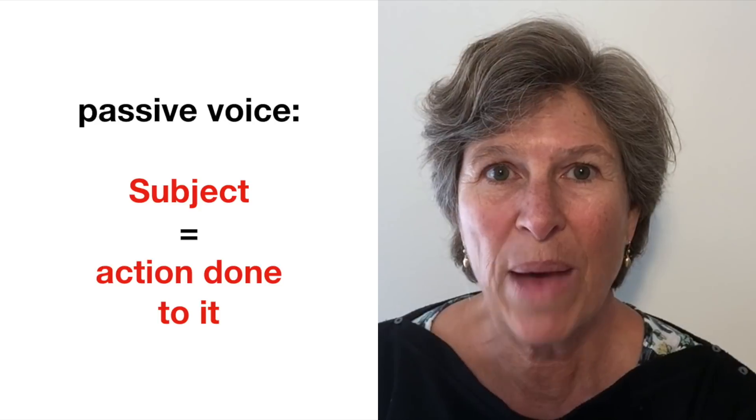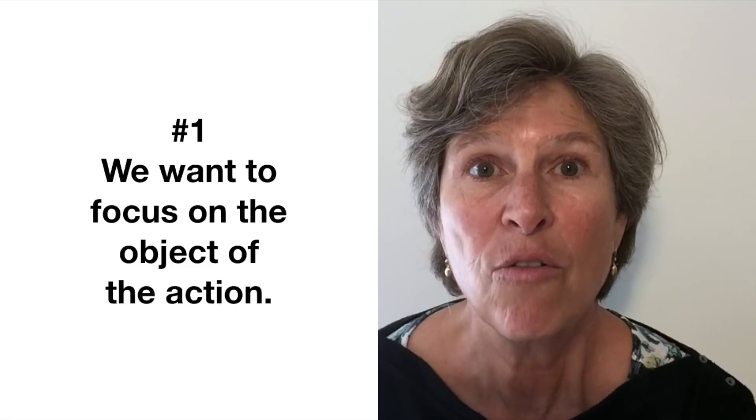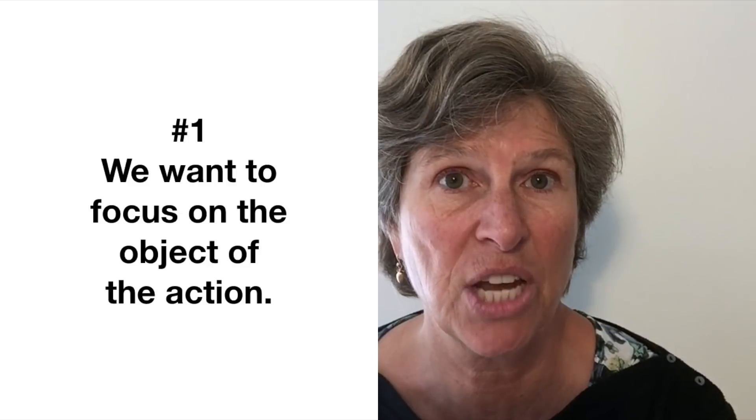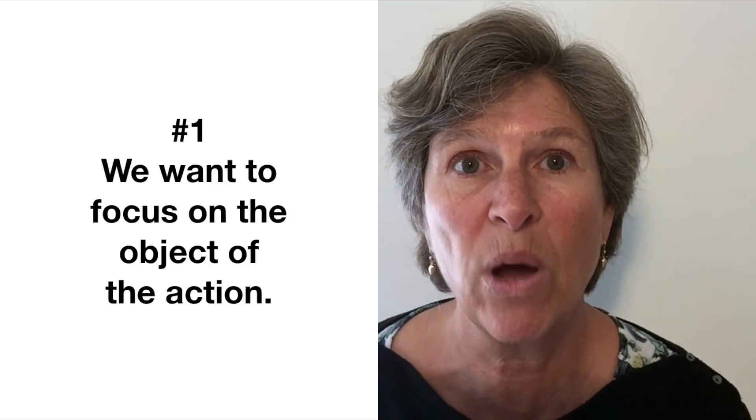But sometimes we turn it around and make the object the subject. In a typical English sentence, the subject is the thing that is doing the action, and the object is the thing that has the action done to it. In a passive sentence, the subject is the thing to which action happens. The first reason someone uses the passive voice is to put more emphasis on the object — they make it the very first thing we're talking about.